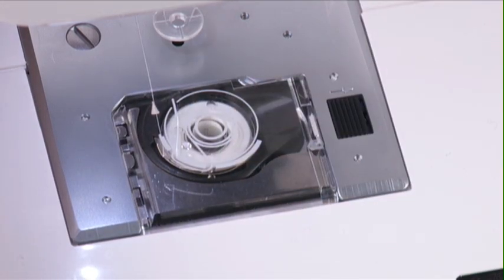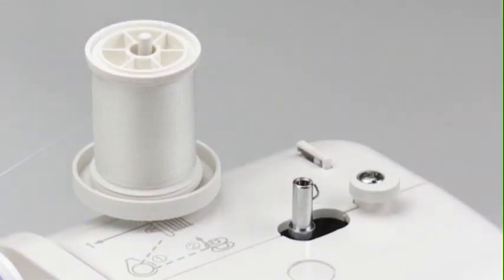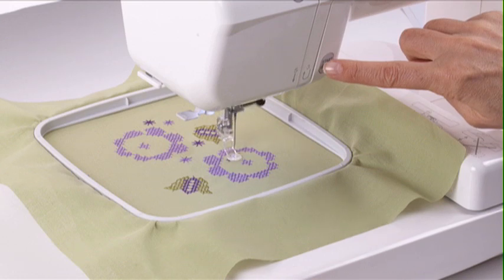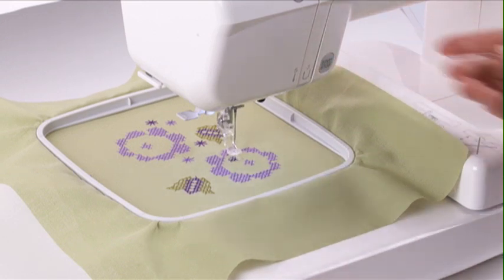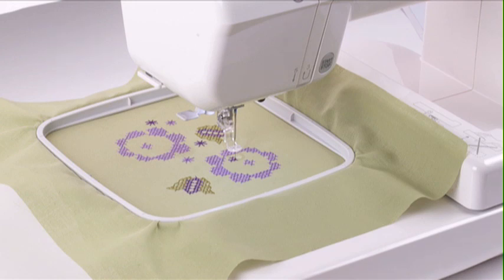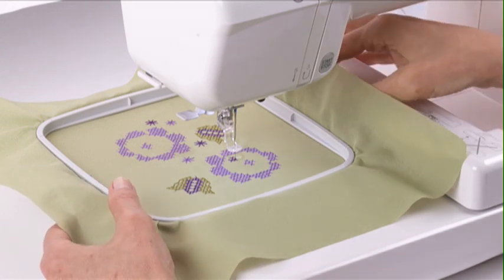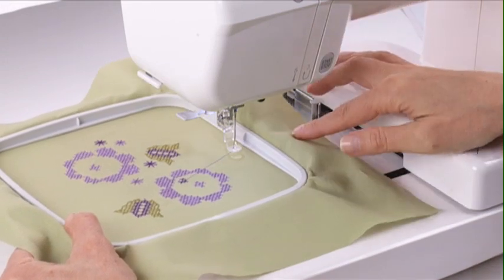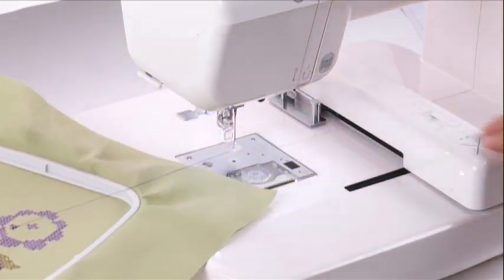If you need to wind a bobbin during embroidery, use the auxiliary spool pin, spool pin felt, and spool stand. First press the start stop button to stop stitching. Raise the presser foot lifter. Raise the needle to its highest position, remove the hoop, and trim the thread.